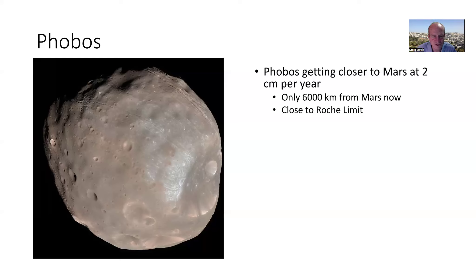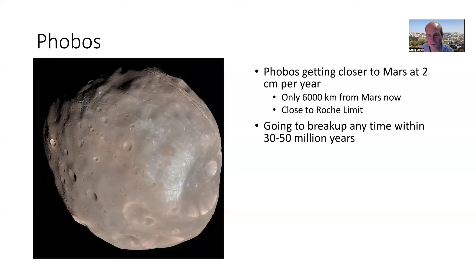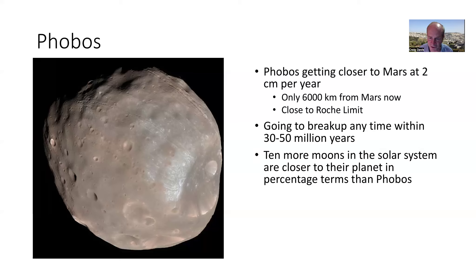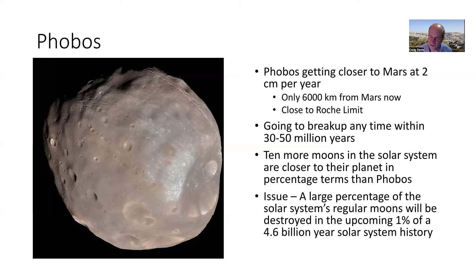Phobos is at 88% of its Roche limit. If it were liquid it would already have been torn apart. Because it's solid it tends to stick together, but since it's getting closer, the tidal forces will only get stronger, and it's going to break up within the next 30 to 50 million years. Interestingly, there are 10 more moons in the solar system that are closer to their planet, in percentage terms, than Phobos is.